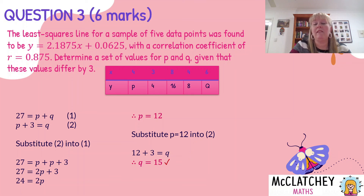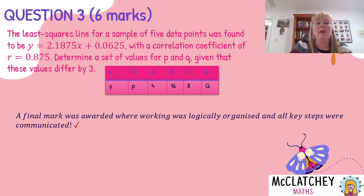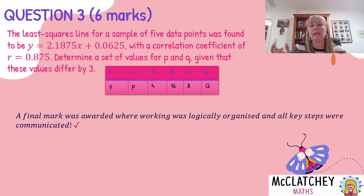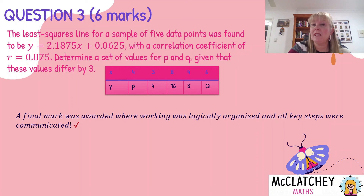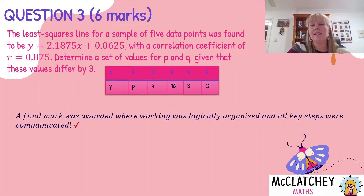So we've found p = 12 and q = 15 — that's the fifth mark out of six. The sixth mark was awarded where working was logical, organized, and all key steps were communicated. It's very important to lay your work out methodically: write the formula before substituting, number your simultaneous equations, state what you're substituting where, and finish with a statement communicating your final answer.